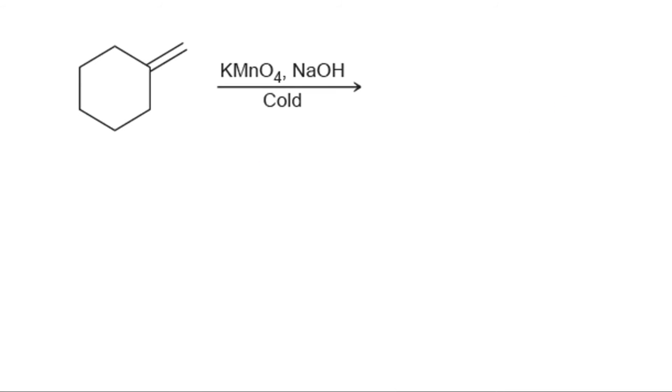Let us try to write the products of these reactions. In this example, treating an alkene with cold potassium permanganate and sodium hydroxide results in the syn addition of OH and OH across the alkene. In this case, the product has no chirality centers, so stereochemistry is not a relevant consideration.